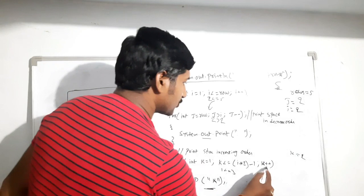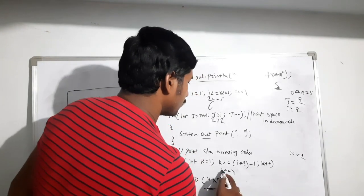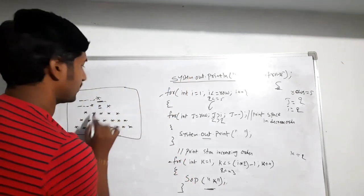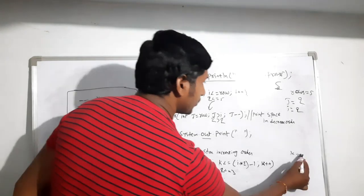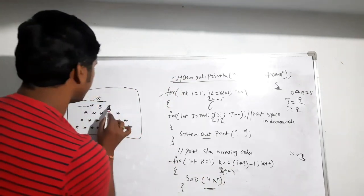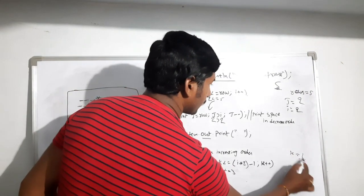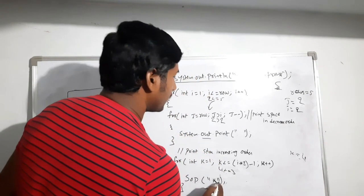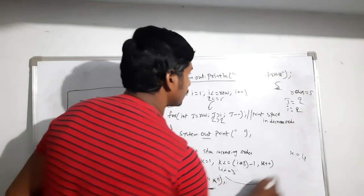k equals one, one less than or equal to three: condition true, prints the first star. k becomes two, two less than or equal to three: condition true, prints the second star. k becomes three, three less than or equal to three: condition true, prints the third star. k becomes four, four less than or equal to three: condition false, so it exits this loop and goes back to the outer for loop.